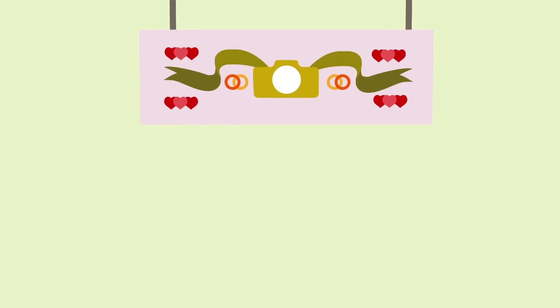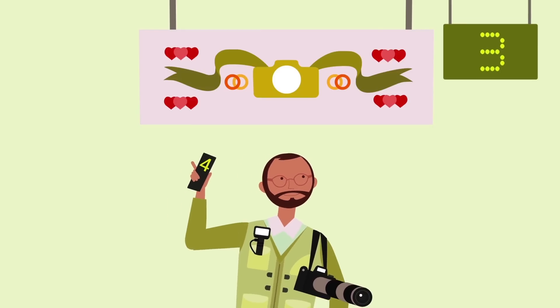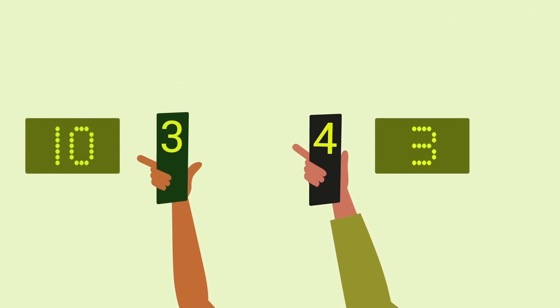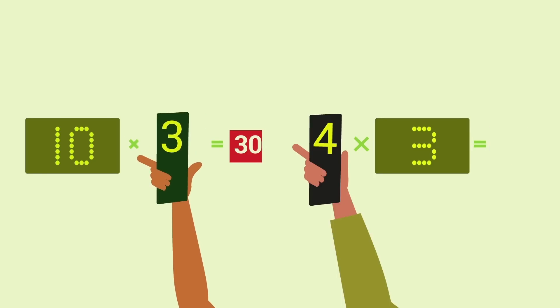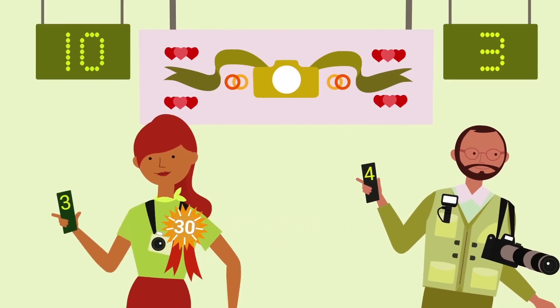Now let's push our scenario one step further. Say two different businesses compete on the same keyword, wedding photography. Richard bids £4, but his advert is not deemed very relevant — just a 3 out of 10. Claire bids £3 and her relevance is a full 10. If we look closely, we can take all this info and figure out what will happen in the auction. Multiplied out, Richard's auction score — called Ad Rank — is 12. Claire scores an impressive 30, even with a lower max CPC. Although her bid was £1 less than Richard's, Claire's advert wins the auction and she gets a higher position on the page than Richard.